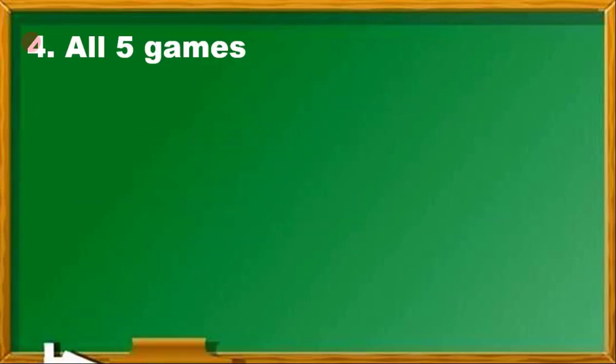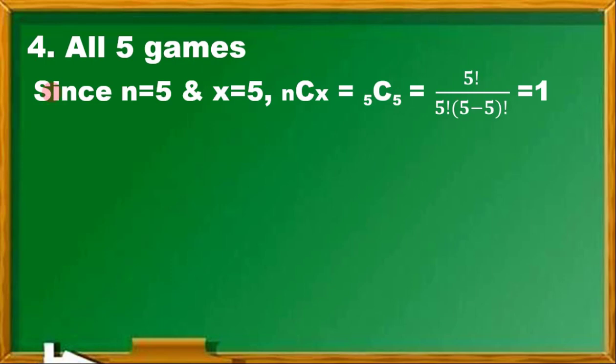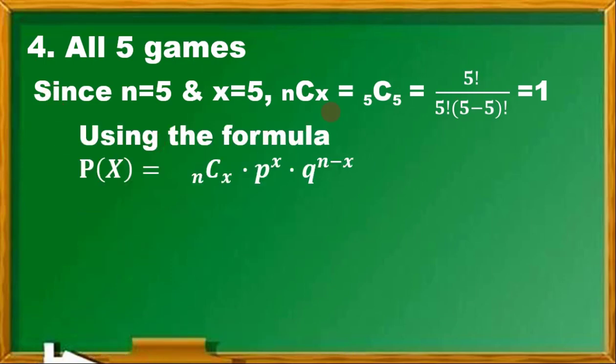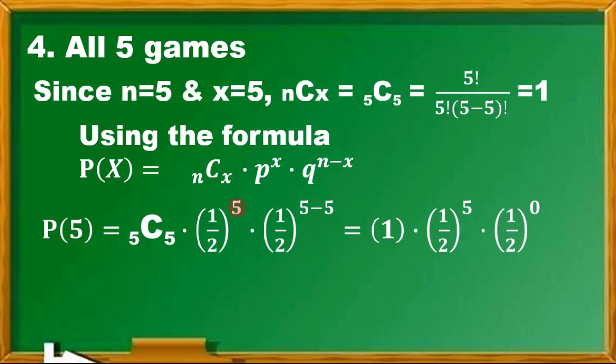For number 4, P(5)—the team will win the 5 games. 5C5 is 1. Plugging in the values, 1/2 raised to 5 minus 5, that is 0, so this is also 1. So we have 1/2 raised to 5, because this becomes 1 and this becomes 1. So 1 out of 32. Where did this 32 come from? This came from 2 raised to 5, that's 32. Final answer for P(5) is 1 over 32.